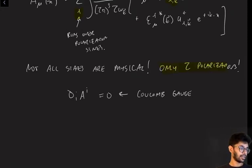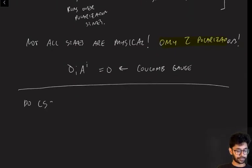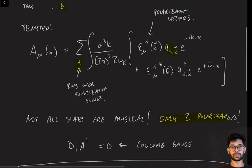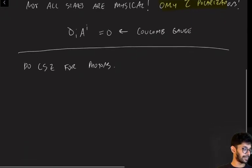And the end effect, as I mentioned earlier, is that you only end up summing over two physical polarizations. And once you understand this, it is not hard to do LSZ for photons. You have to stick this expansion into the same LSZ formula that we had previously, and you can do that.